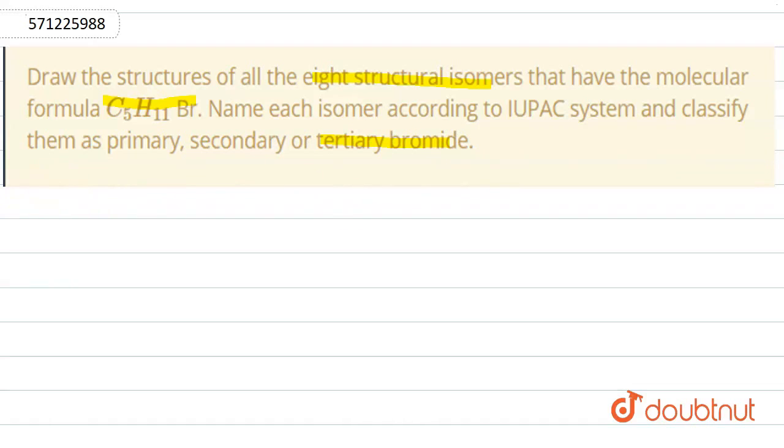Okay, so now we will first form the structural isomers that are possible for this formula. We are given the formula C5H11 bromine. For this, a total of eight types of isomers will be formed.